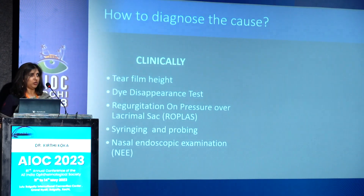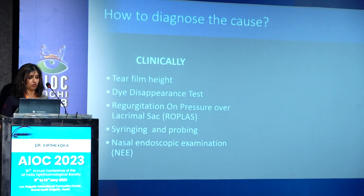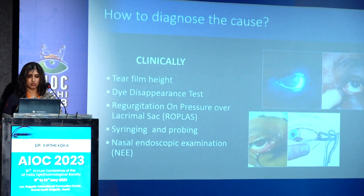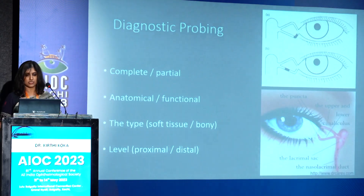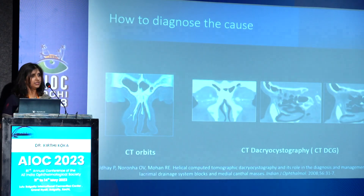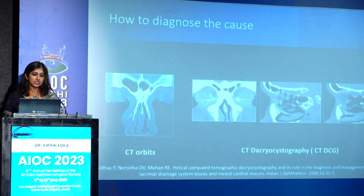To find out the cause of failure, simple clinical tests suffice most of the time — tear film height, dye disappearance test, ROPLAS sign, syringing and probing, and nasal endoscopic examination. Probing helps to know with anatomical versus functional, soft stop versus hard block, and whether it is a proximal or distal block. When clinical tests don't help, fall back on investigations: CT dacryocystogram is very useful showing the exact level of block; MR dacryocystography can also be done; CT orbits for patients with fractures.